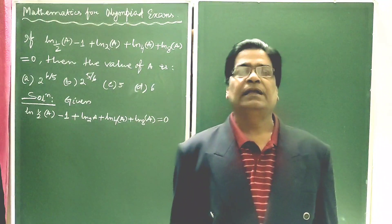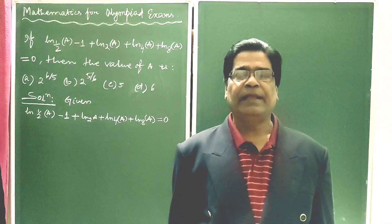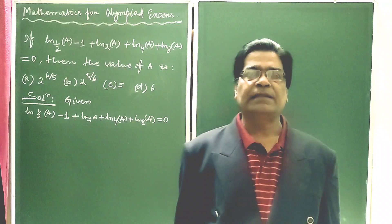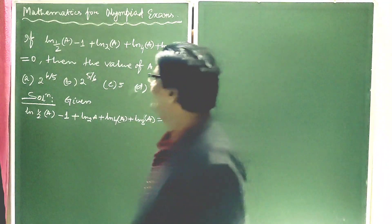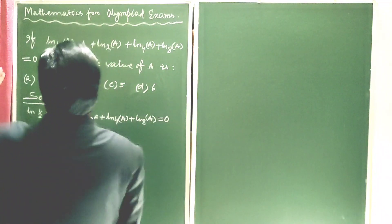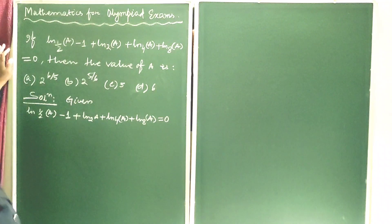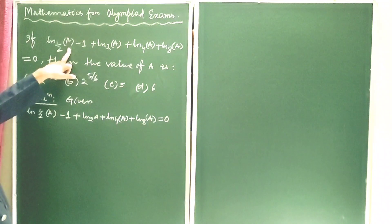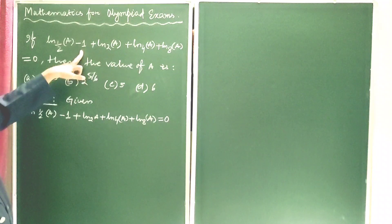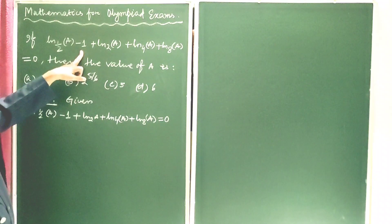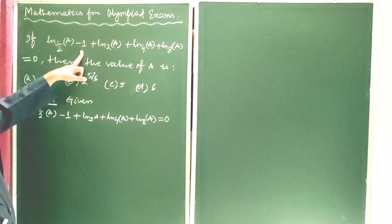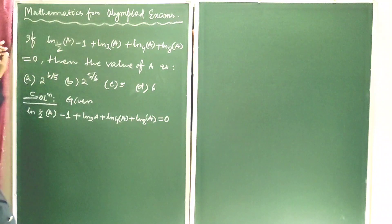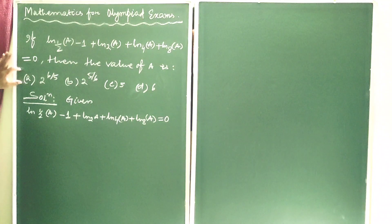Dear students, let us solve a very nice logarithmic equation. The question is: if ln base one-half of (A minus 1) plus ln base 2 of A plus ln base 4 of A plus ln base 8 of A is equal to 0, then find the value of A. The choices are given and we have to find the correct answer.